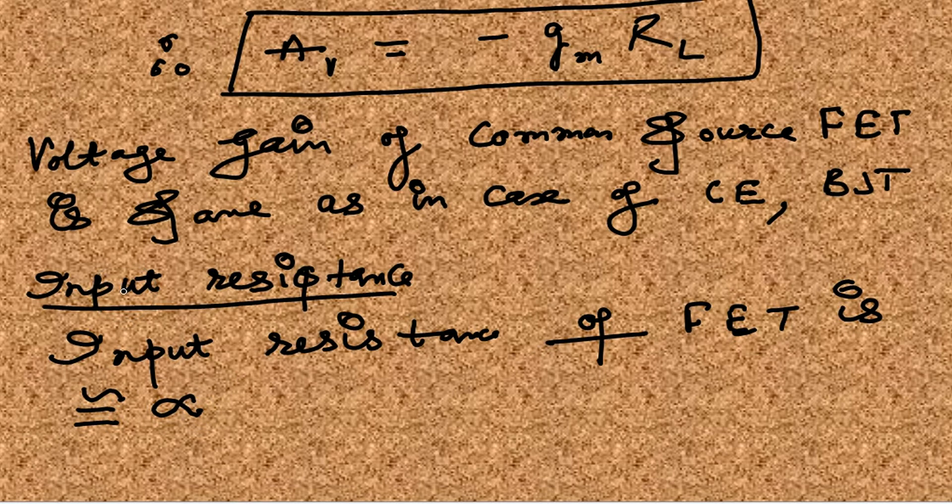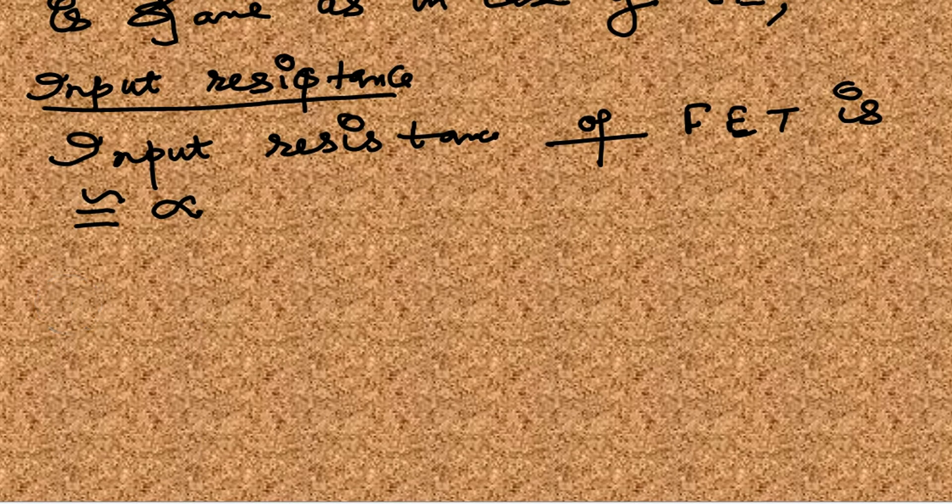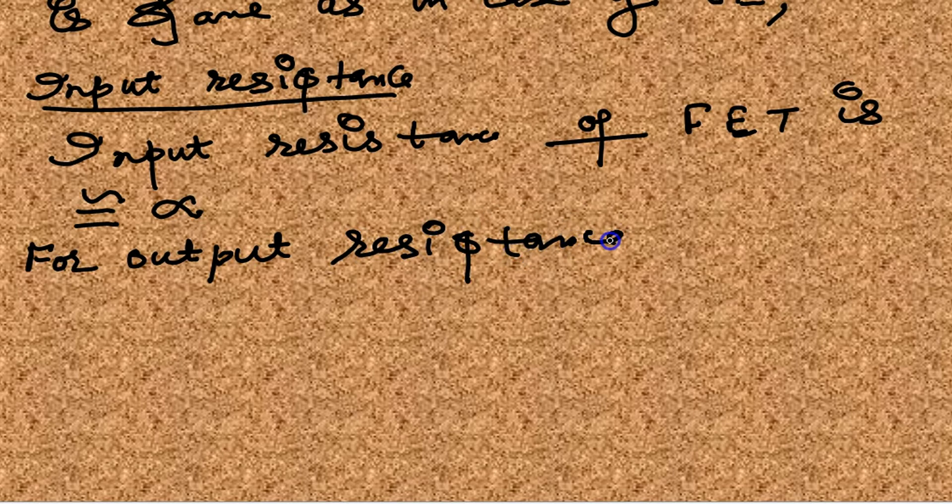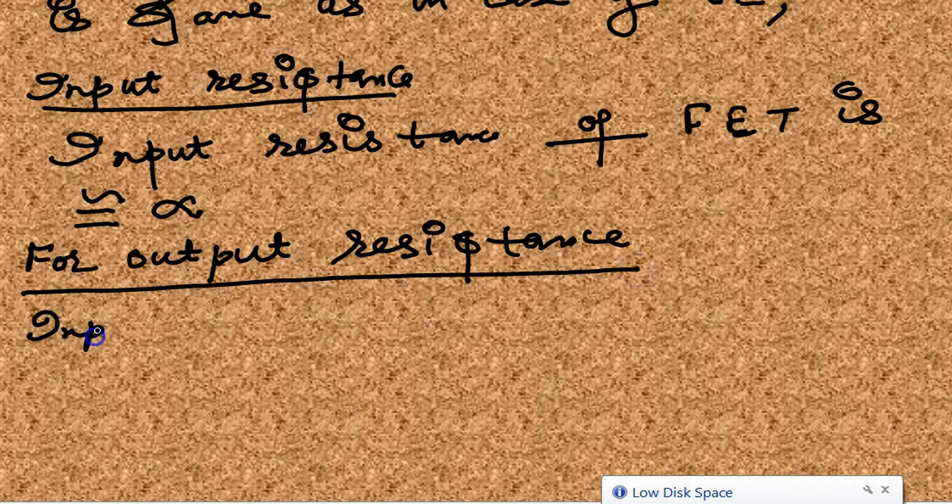Input resistance of FET is approximately infinity. You know why? Because it is reverse biased and there is no gate current.